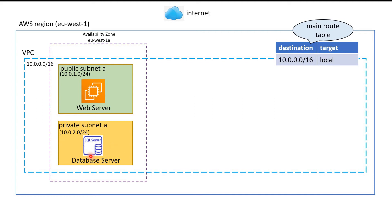For example, if the database server with IP range 10.2.0.0/24 wants to connect to the web server with IP range 10.0.1.0/24, the route table allows this because the destination matches the local network and the target is local. So resources in these two subnets can communicate with each other. Right now, both of these subnets are effectively private subnets. To make the first subnet truly public, we need to take additional steps.